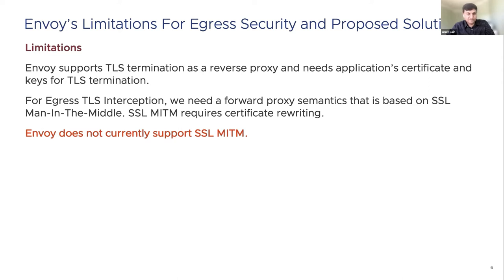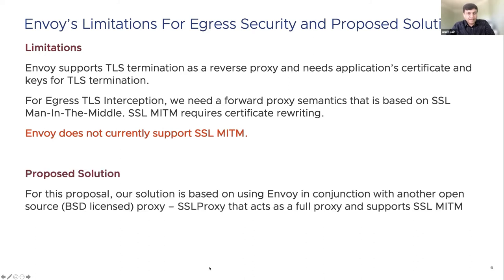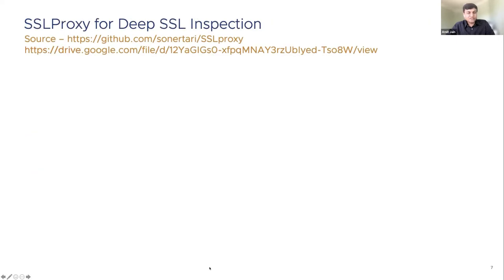For this session, we are exploring an alternative solution using another open-source proxy called SSL proxy, deployed in conjunction with OnWise to achieve egress TLS traffic observability. SSL proxy is a full proxy that intercepts TLS connections, decrypts the traffic, and diverts traffic to other programs for processing and deep inspection. It is open source and BSD licensed.